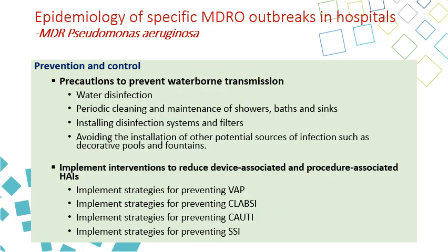For preventing waterborne transmission, ensure water disinfection and periodic cleaning and maintenance of showers, baths, and sinks, because these are places that have vapor of water with attached Pseudomonas. They should be cleaned and maintained, and replaced if old and leaking. Install disinfection systems and filters in the hospital, and avoid installing potential sources of infection such as decorative bowls and fountains, which can distribute mist of water containing Pseudomonas aeruginosa.